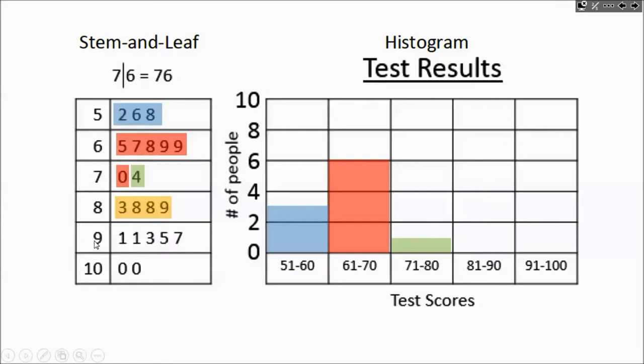And then 91 to 100, well we have all of these. That represents 91, 91, 93, 95, 97. And we also have these two down here. Those are 100s. There's 100, there's 100.